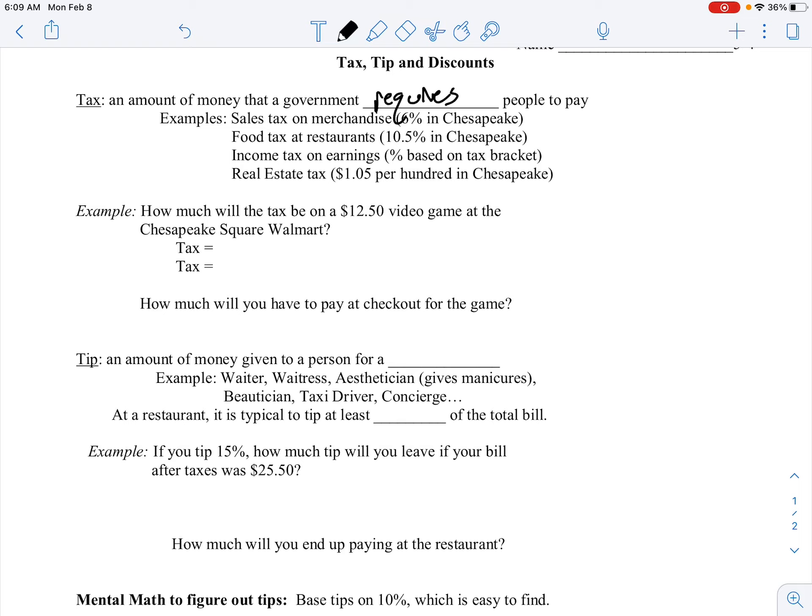Food tax in Chesapeake is 10.5 percent. Income tax is how much you pay from your paycheck depending on how much you make. And real estate tax is $1.05 per one hundred dollars. That is going to be a little bit over one percent.